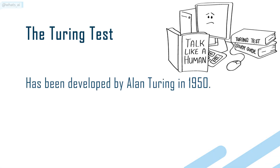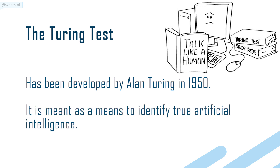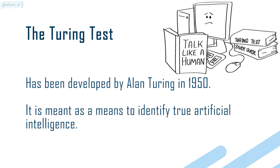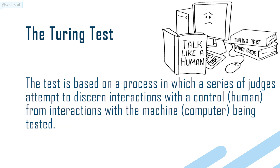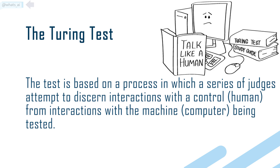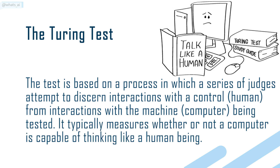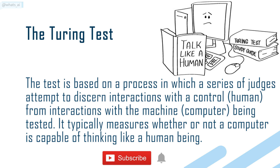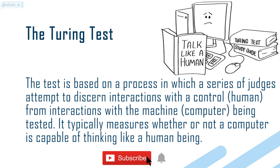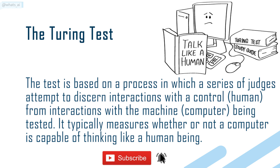The Turing test was developed by Alan Turing in 1950. It is meant as a means to identify true artificial intelligence. The test is based on a process in which a series of judges attempt to discern interactions with a control from interactions with the machine being tested. It typically measures whether or not a computer is capable of thinking like a human being.